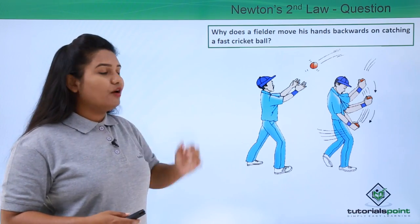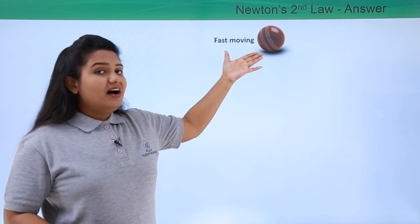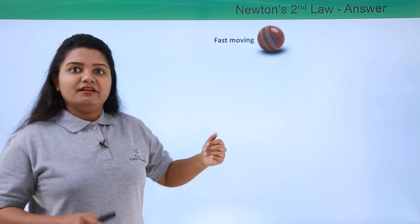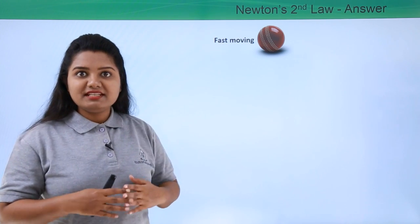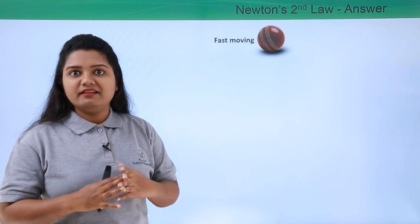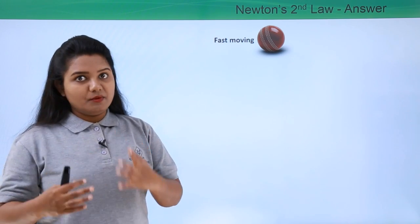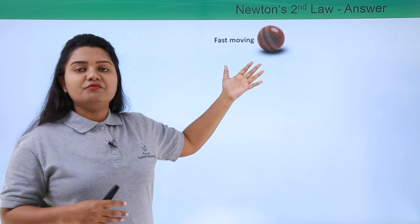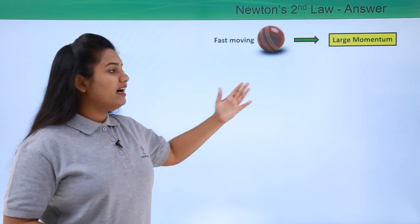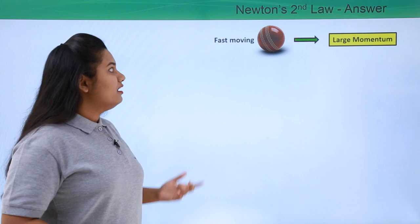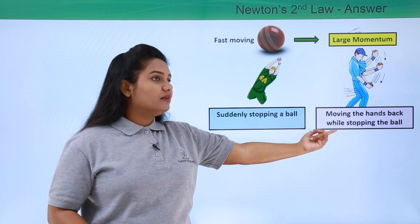Let's find out using Newton's second law of motion. We know that a fast moving object has a very large velocity. A body with a large velocity has a larger momentum as well, because velocity is directly proportional to momentum. So a fast moving cricket ball hit by a bat has a very large velocity and therefore a very large momentum.